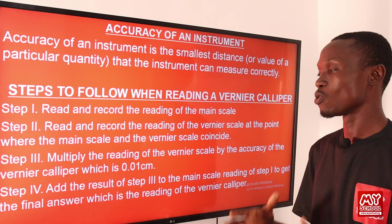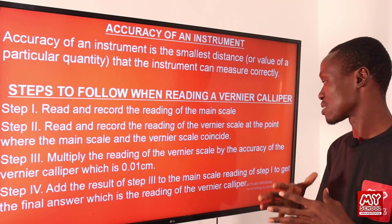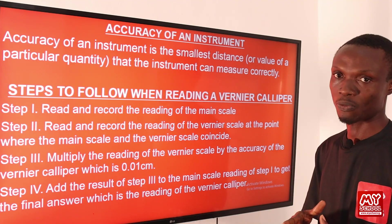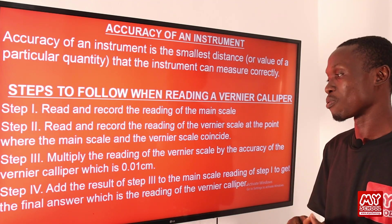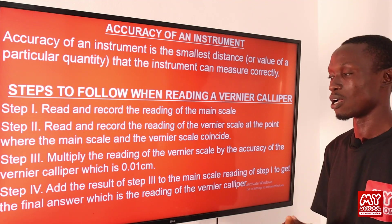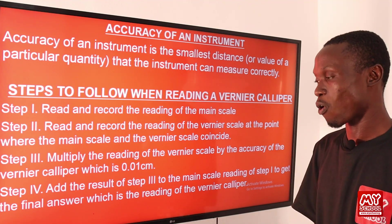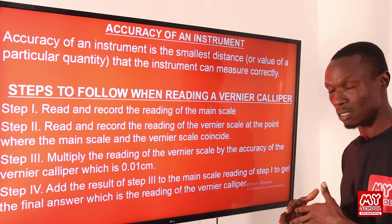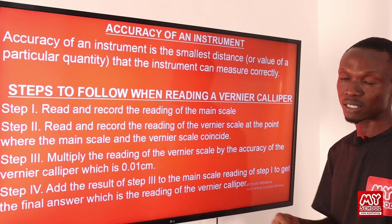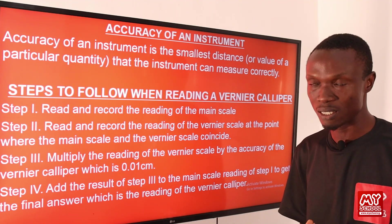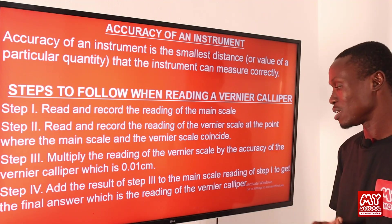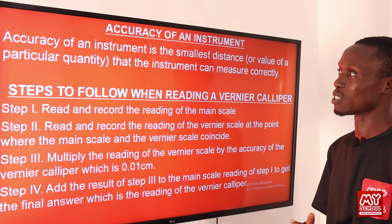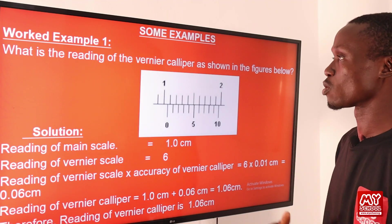Step three, multiply the reading of the vernier scale by the accuracy of the vernier caliper, which is 0.01 centimeter. Step four, add the result of step three to the main scale reading from step one to get the final reading, which is the reading of the vernier caliper.